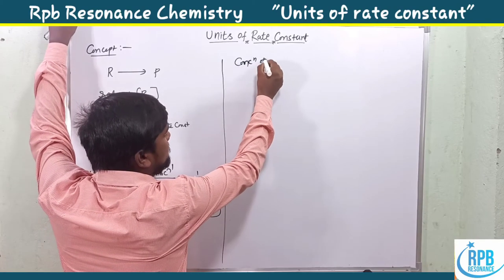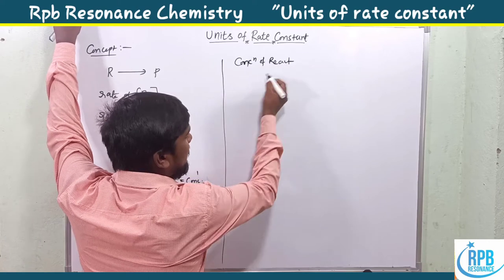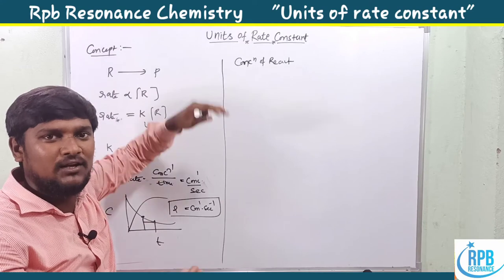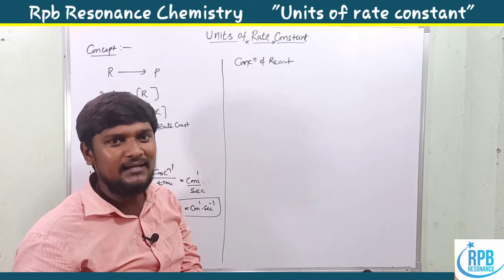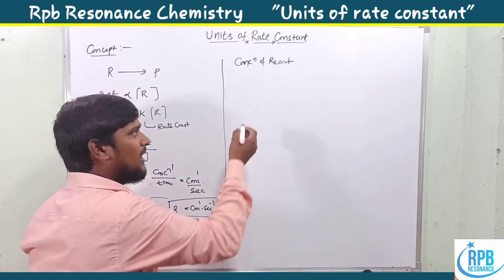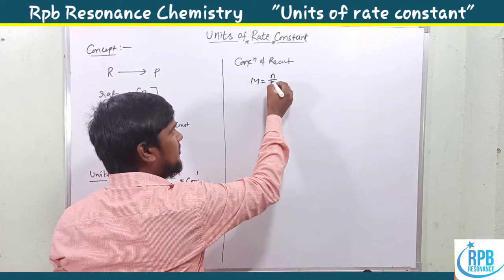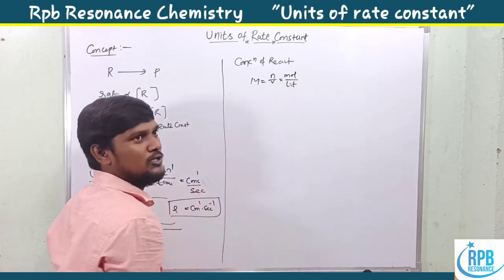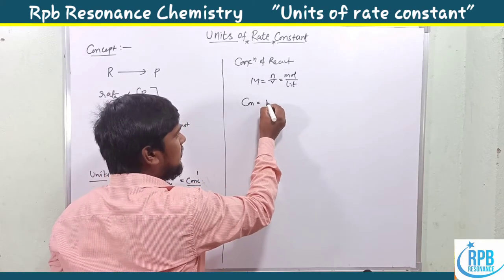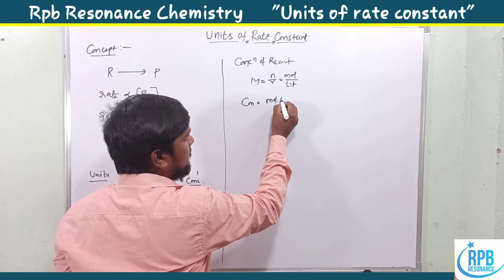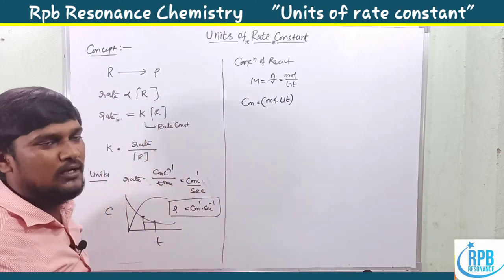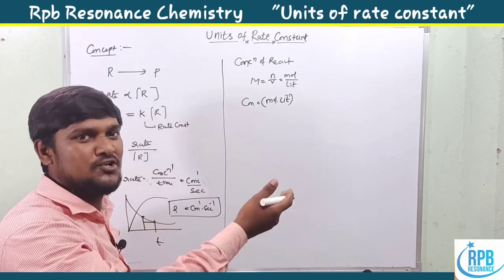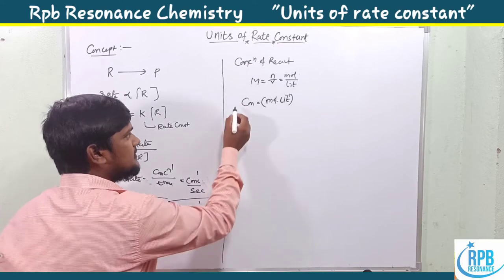Now let's find the units of concentration of reactant. If a reactant is dissolved in any solution, it has a certain molarity or normality. Concentration is the number of moles per volume — moles per liter. So concentration equals mole times liter to the power minus one, since the denominator goes to the numerator and the sign changes. These are the concentration units.